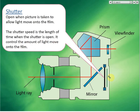The shutter speed is the length of time the shutter is open, and it controls the amount of light that reaches the film. You can let the shutter open for 0.1 seconds, 0.5 seconds, two seconds, or even half an hour. For example, if you want to photograph stars, the light is very dim, so you may leave the shutter open for half an hour to collect enough light.